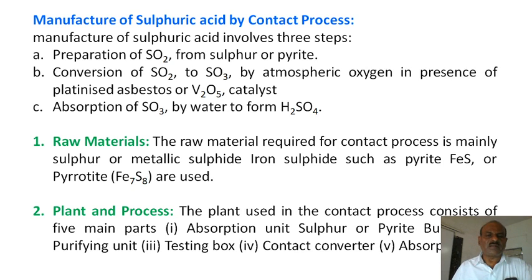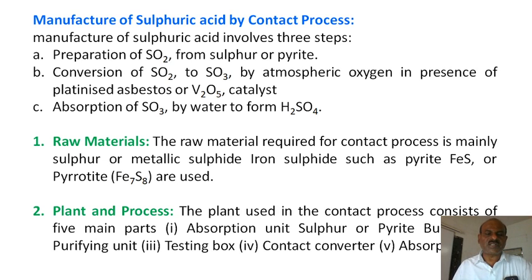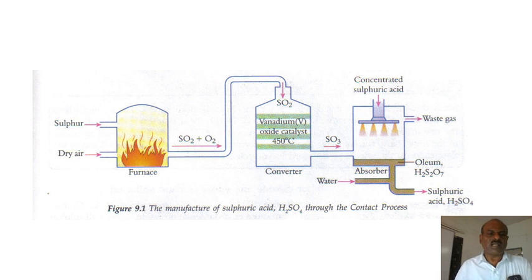The raw material is to be purified — it can be ground or crushed to powder form — and then used for the contact process. The five compartments present in the manufacturing of sulfuric acid are: first, the sulfur burners; second, the sulfur pyrites burners; third, the purifying unit; fourth, the testing box; and fifth, the absorption unit. These five compartments are used to manufacture the required quantity of sulfuric acid.